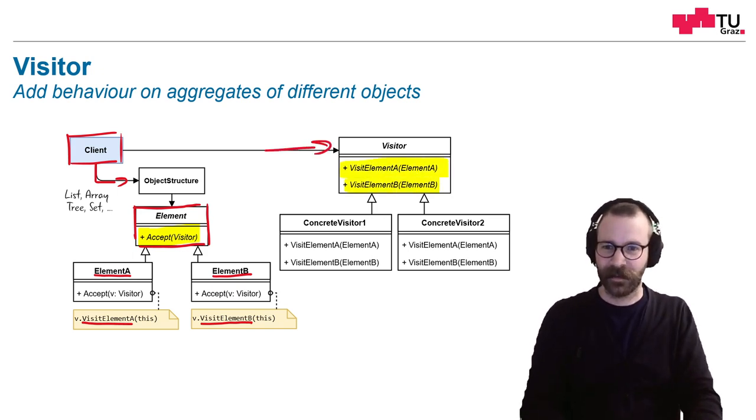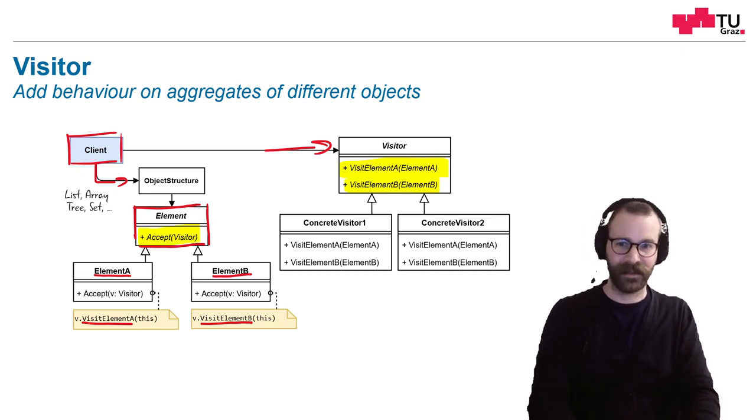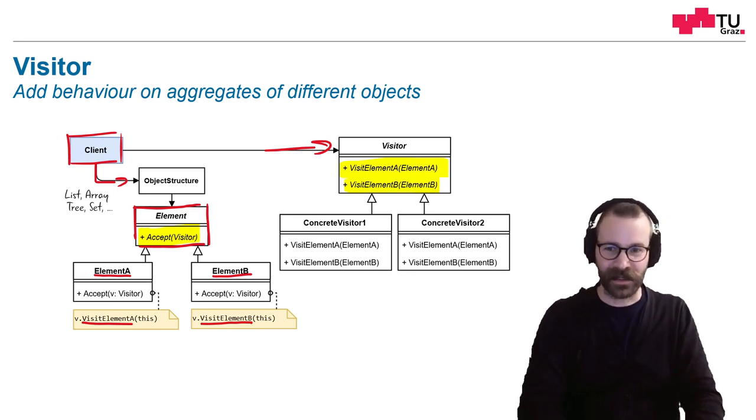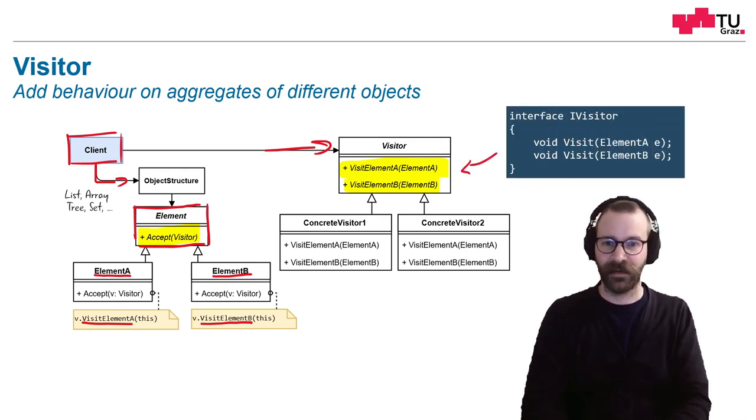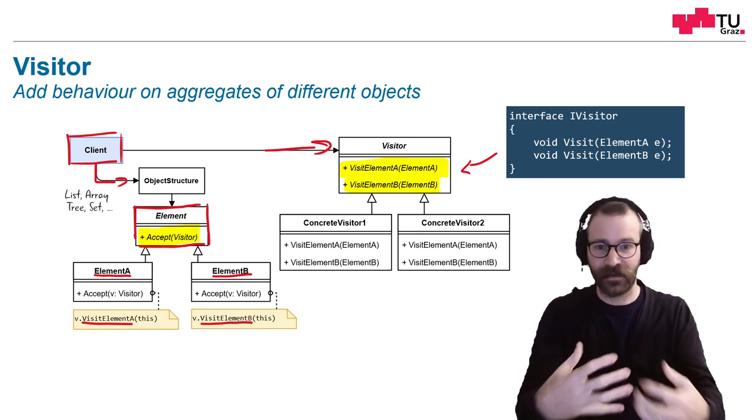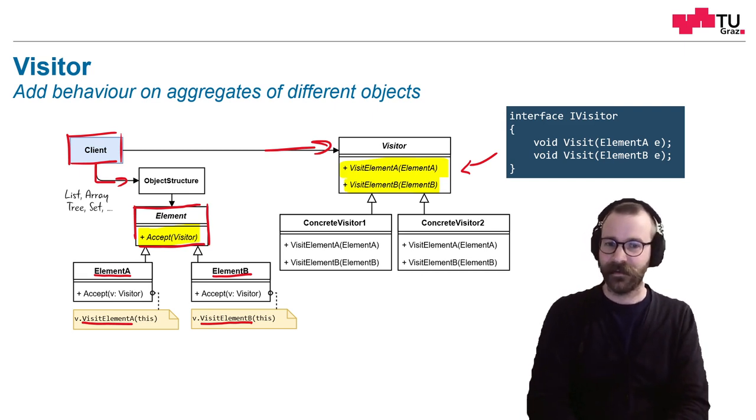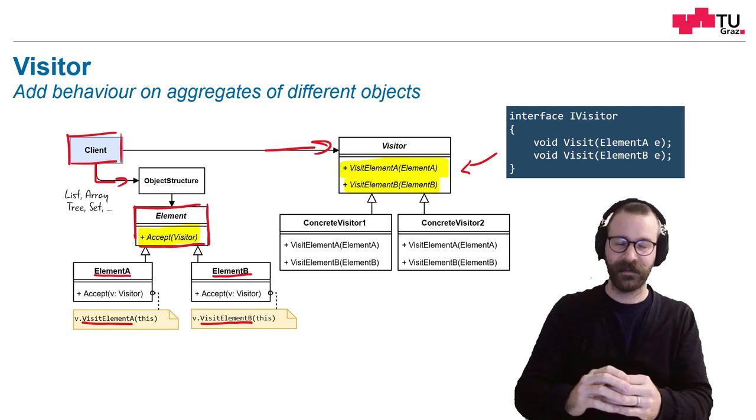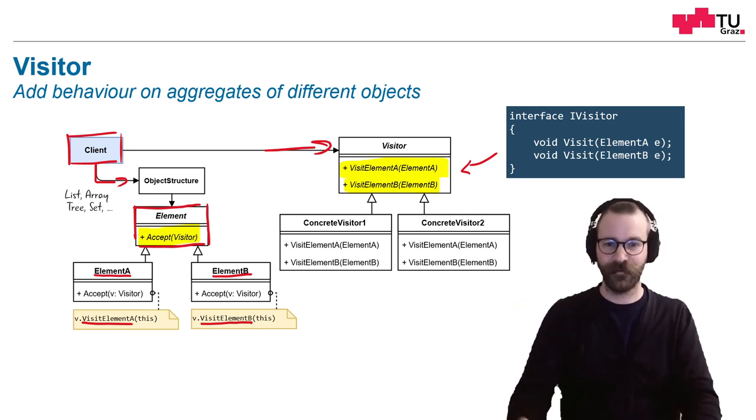Let's look at the visitor now. So the visitor interface itself has these two methods, visit element A with element A and visit element B with element B. In programming languages where you have an overloading mechanism, you could also implement it like this in this example above. Here the method name is the same, but the parameter type is different and the compiler decides which actual method should be called. In the original depiction of the gang of four, they used just a different name for the different types. As you can see, the element B and element A decide for themselves which method they should call.